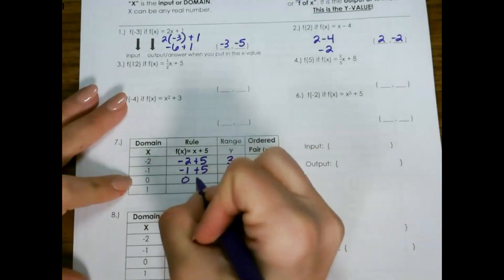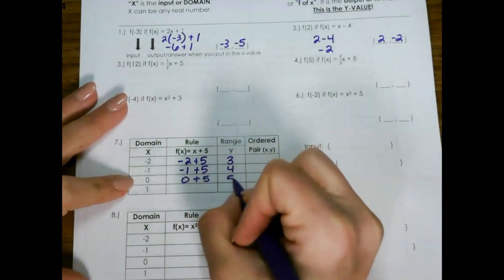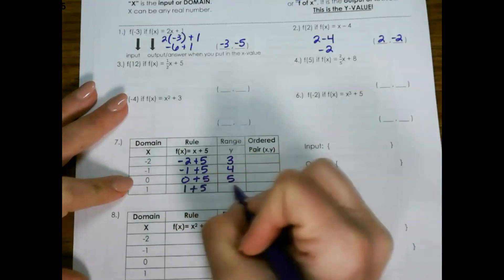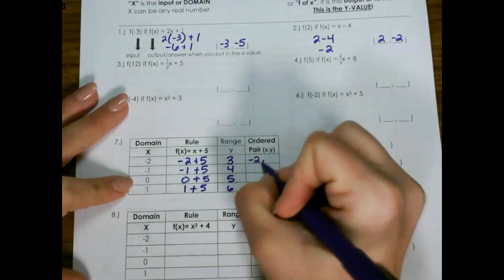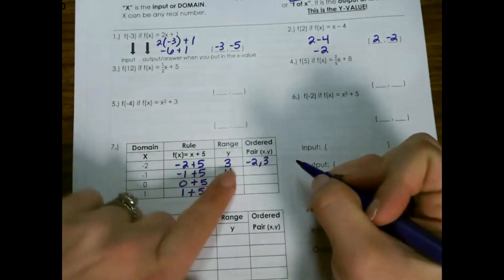So I'm just replacing x with what it tells me to replace it with, and then solving. And then it gives you your ordered pairs with x and y.